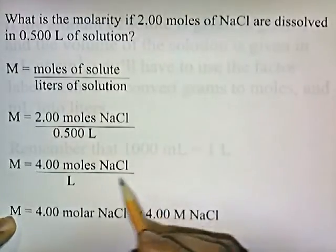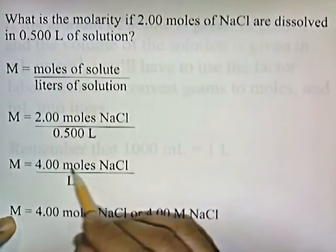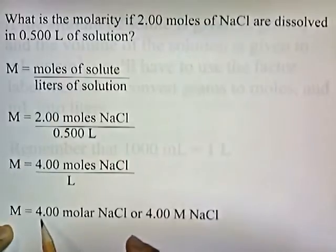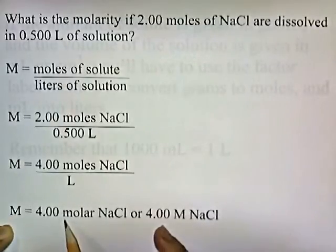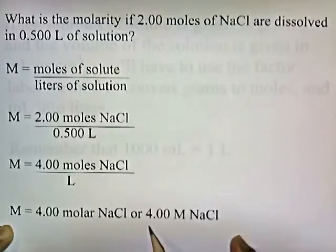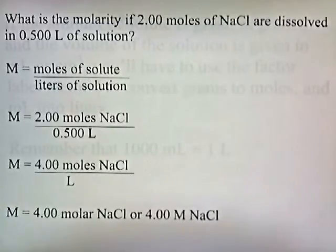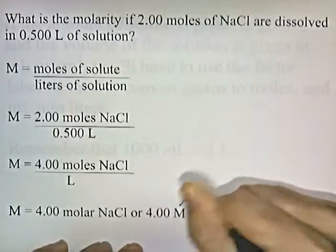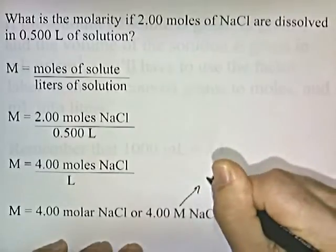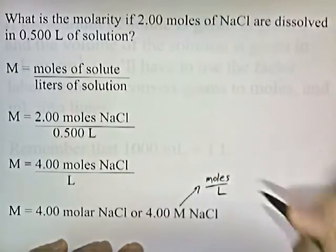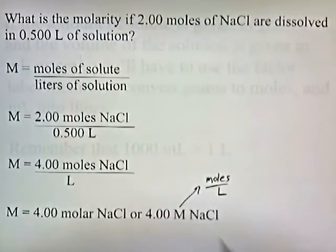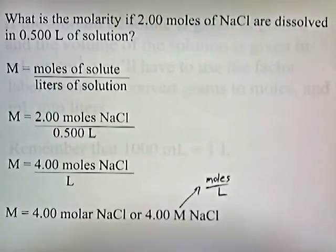Instead of writing four moles per liter, we write four molar NaCl. And instead of writing four molar, we can write four capital M NaCl. This capital M means moles per liter, showing the concentration of the solution.